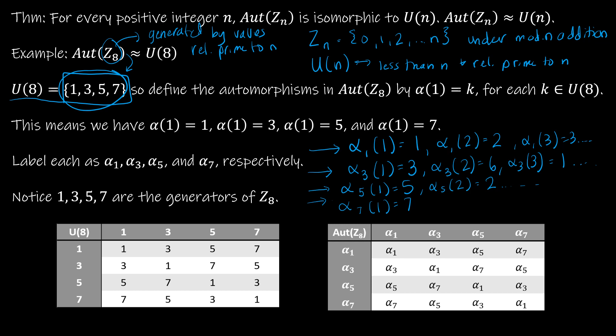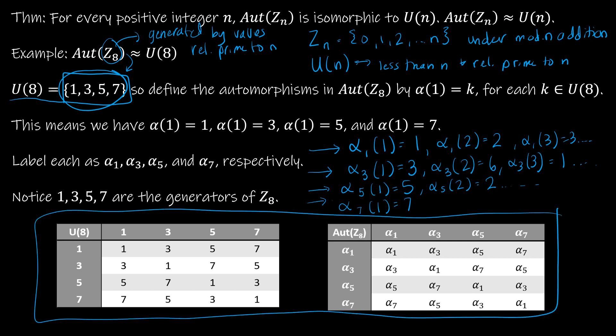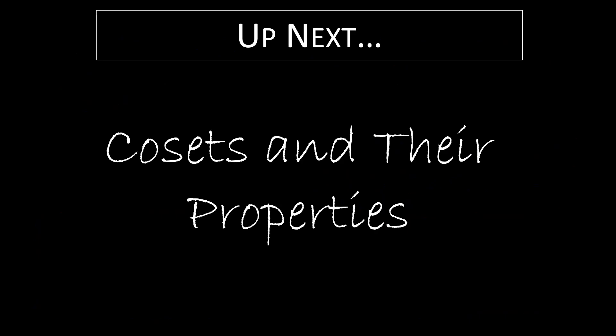Looking at the Cayley tables, U(8) and the automorphism group of Z_8 — which has four automorphisms — are isomorphic to one another. That completes Chapter 6. Coming up next, we're moving on to Chapter 7 dealing with cosets, where we'll look at the definition and properties of a coset.